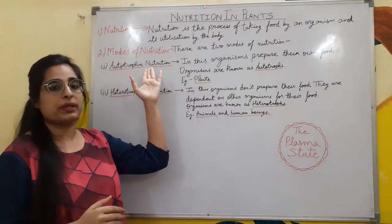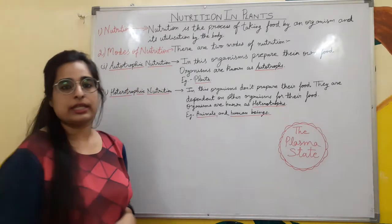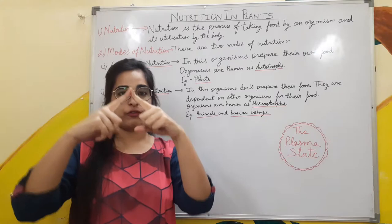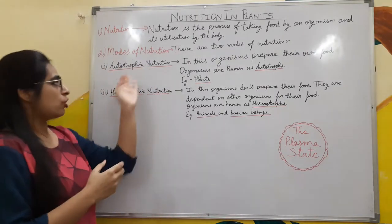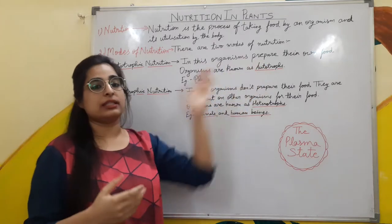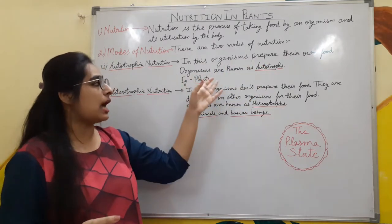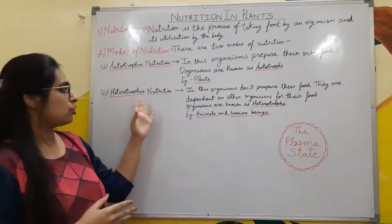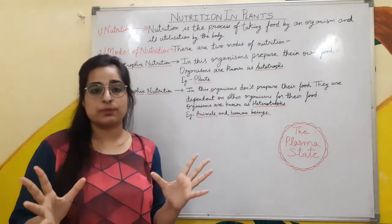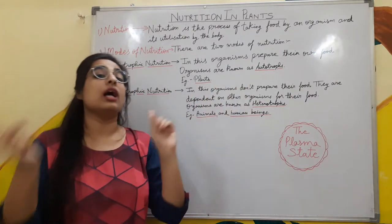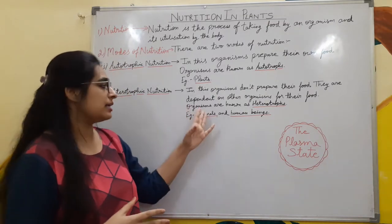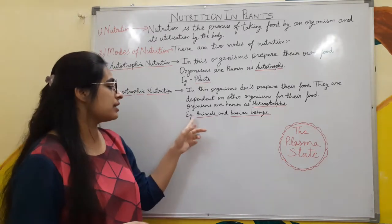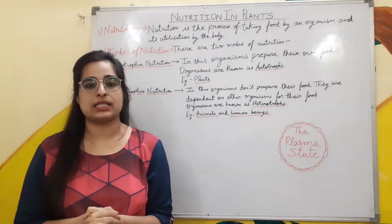The next topic we discussed was modes of nutrition. There are two modes of nutrition: autotrophic nutrition and heterotrophic nutrition. In autotrophic nutrition, organisms prepare their own food. These organisms are known as autotrophs and the example is plants. In heterotrophic nutrition, organisms don't prepare their own food — they are dependent on other organisms for their food. These organisms are known as heterotrophs and examples are animals and human beings.